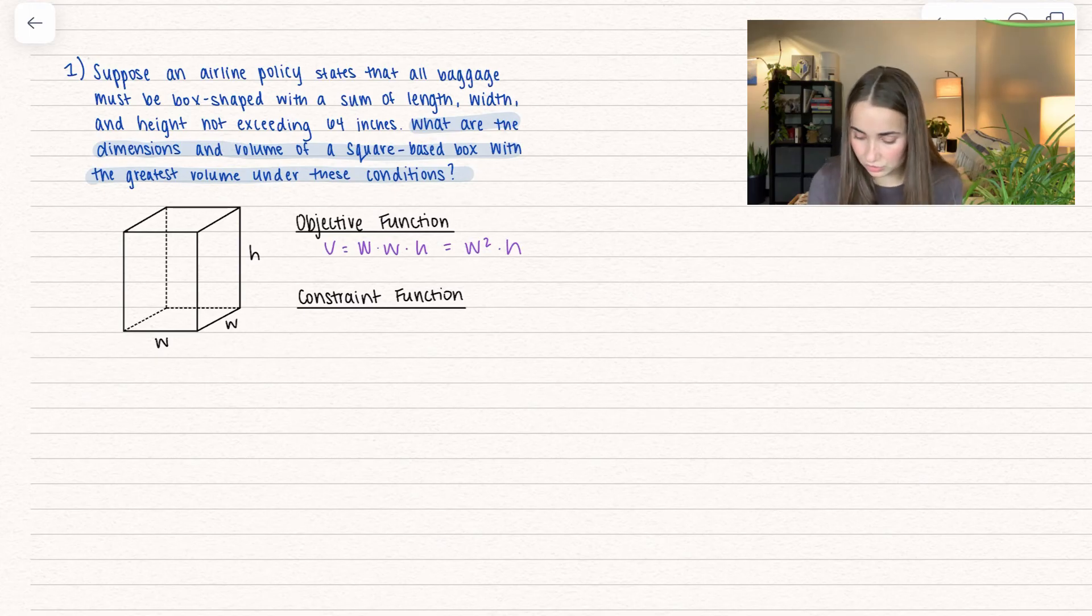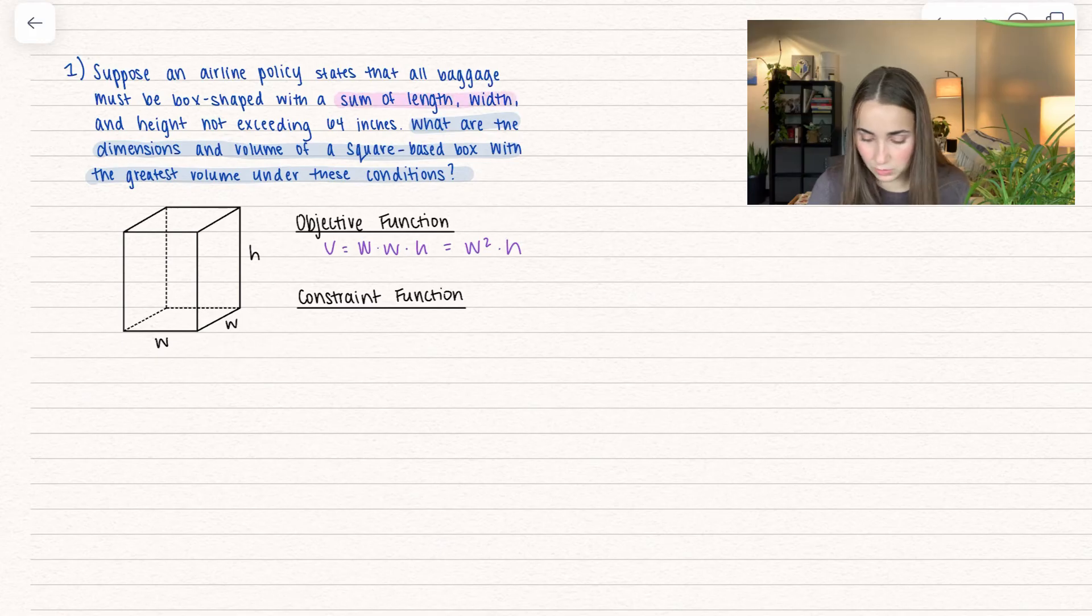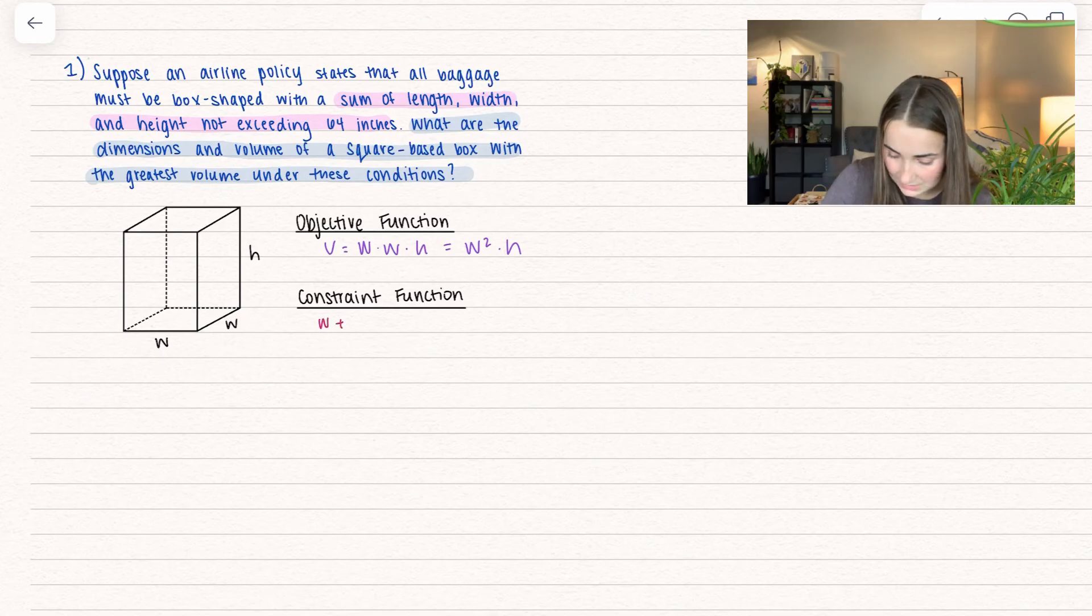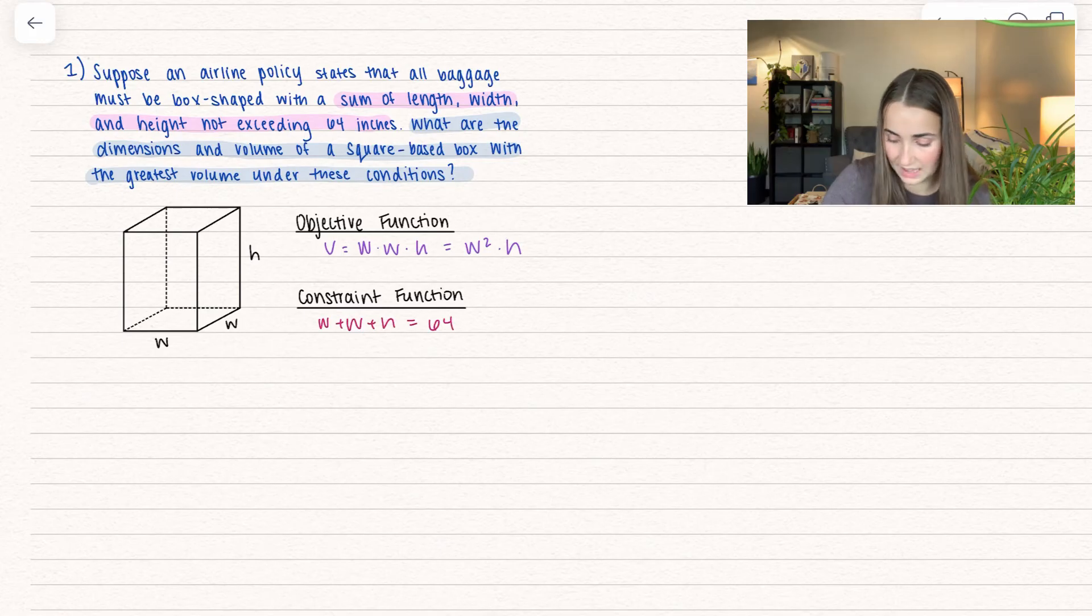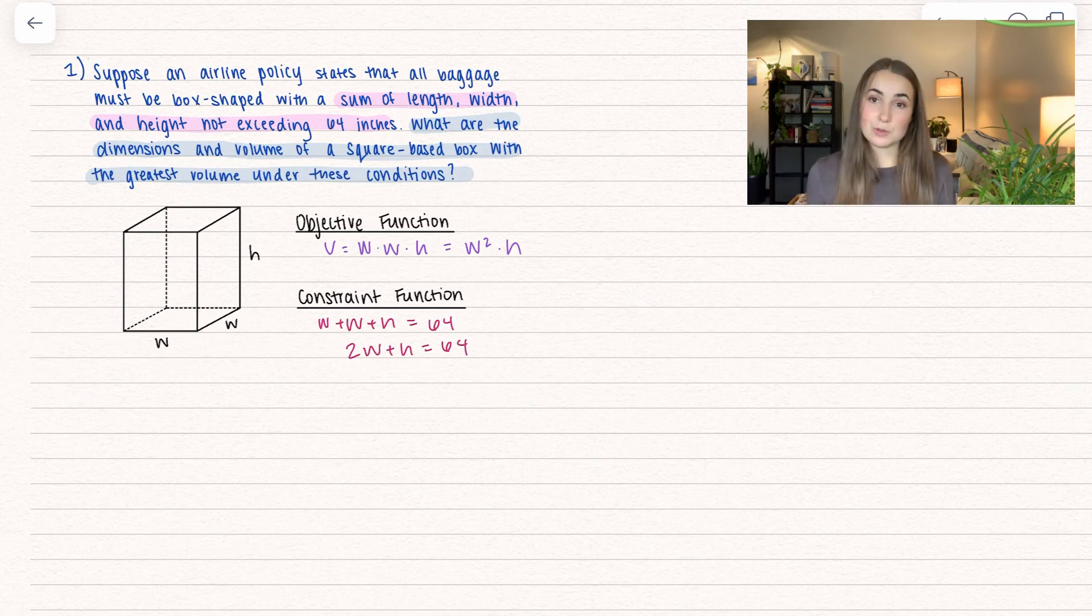Let's talk about our objective function - what are we trying to optimize? We're trying to find the dimensions and volume of a square-based box with the greatest volume. So we are talking about volume. We know volume equals all the lengths multiplied by each other, so W times W times H, or W squared times H. Now let's talk about our constraint. The sum of the length, width, and height cannot exceed 64 inches. So that tells us 2W plus H equals 64.